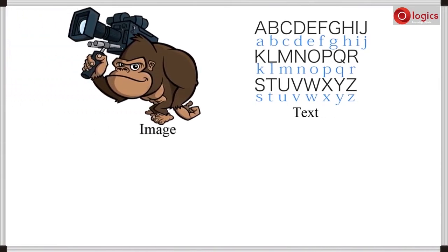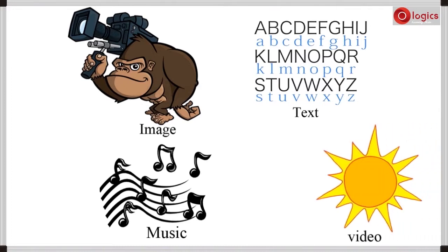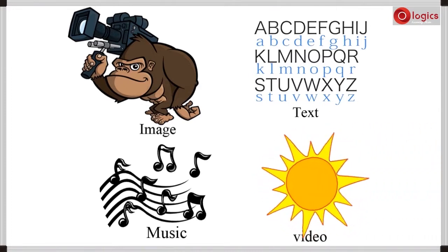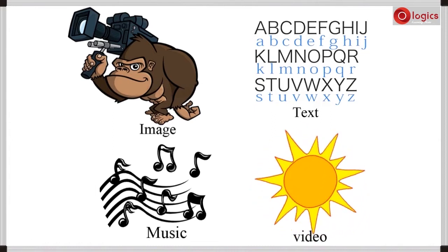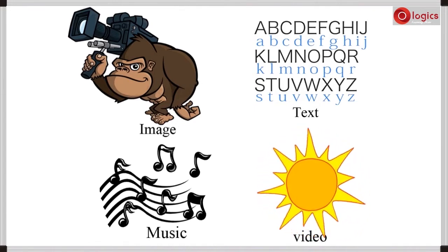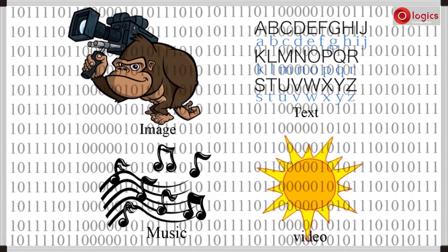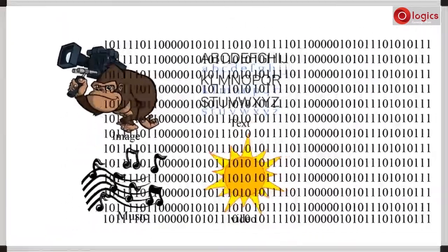Let us see how data is stored in the computer. Data is any kind of information — it can be a text, image, music file, or a video file. This all comes under data. In the computer, data is stored in the form of zeros and ones. This data is converted into zeros and ones and then stored in the computer.